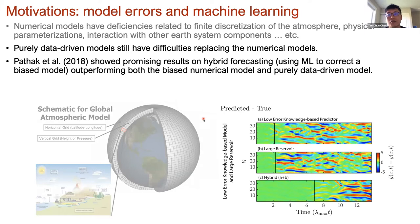Today it is still hard to find any other algorithm that provides better prediction for lead times more than several days for full 3D atmospheric states. The idea is that we accept the fact that the model is not perfect and use machine learning to correct it. This bottom figure shows a nice result from Pathak et al. 2018.